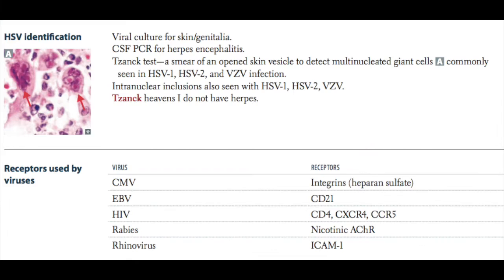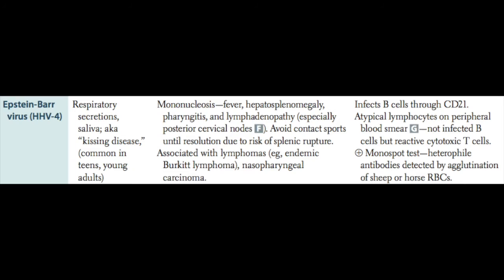The identification of HSV can be done through a Tzanck test or Tzanck smear — a smear of an open skin vesicle to detect multinucleated giant cells. This assay can be used not only for HSV1 and HSV2, but also for Varicella zoster virus. Infected cells also have an intranuclear Cowdry A inclusion — if that comes up on the boards, think HSV. A way to remember this: 'Tzanck heavens I do not have herpes.'